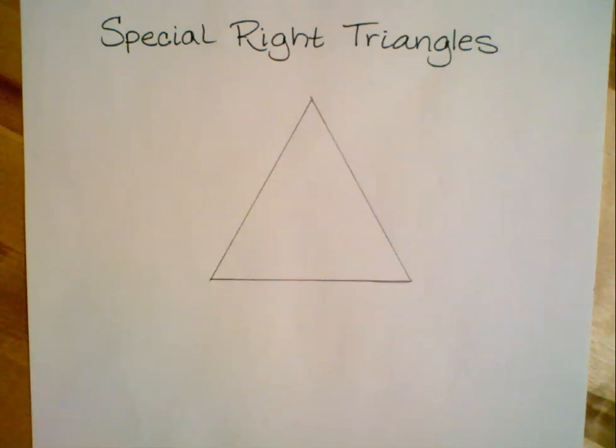In the last video we talked about the first of our two special right triangles, specifically the 45-45-90 triangle, and we saw that the 45-45-90 triangle is produced by dividing a square in half on one of its diagonals.